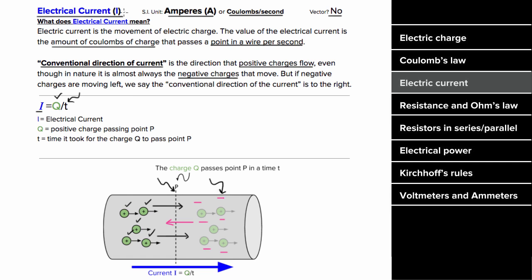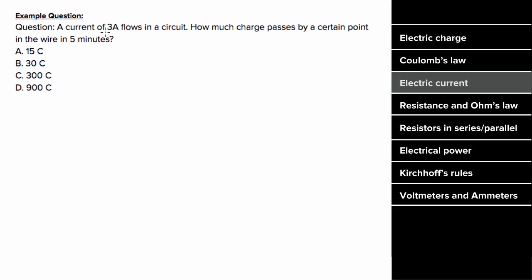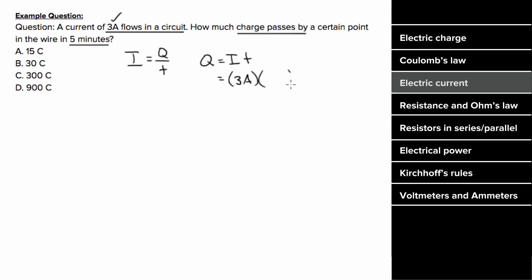For the current example: three amps flows within a circuit. How much charge passes a point in the wire during five minutes? The charge equals current multiplied by time. We take three amps and multiply by the time, but we must convert five minutes into seconds: five minutes times 60 seconds per minute gives 300 seconds. So the total charge is 3 amps times 300 seconds, which equals 900 Coulombs.